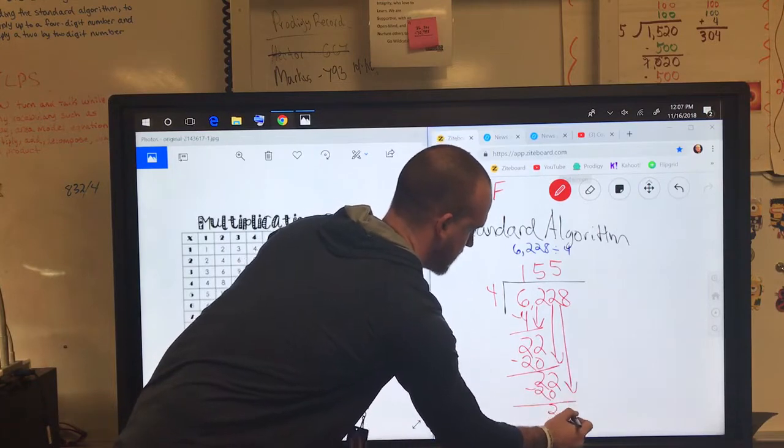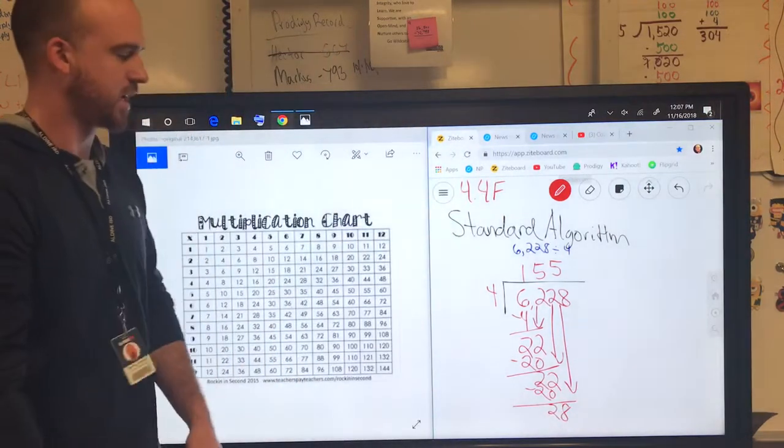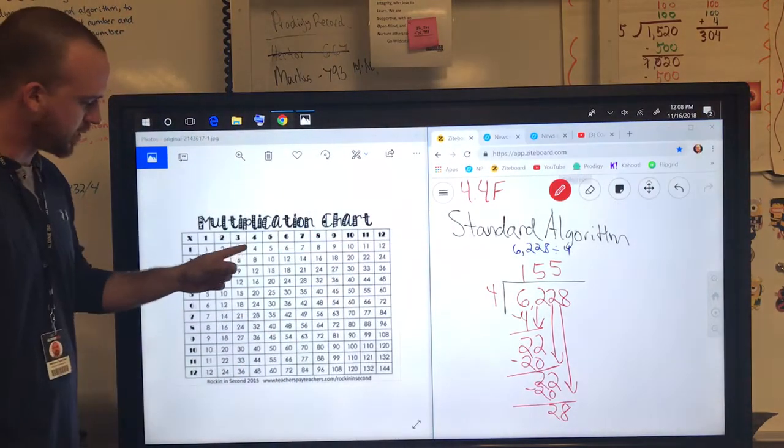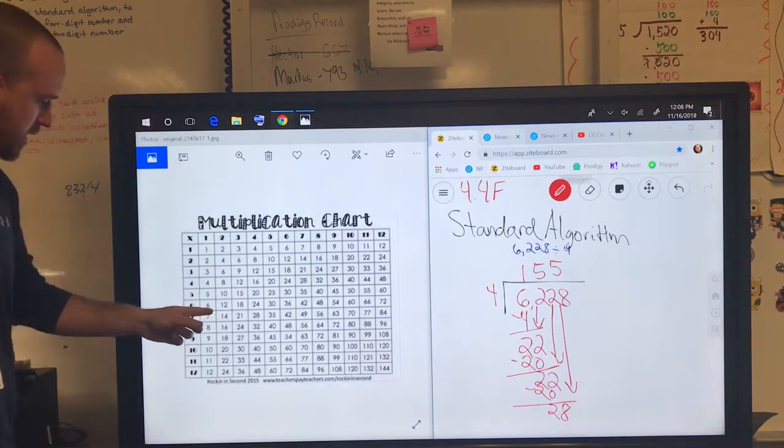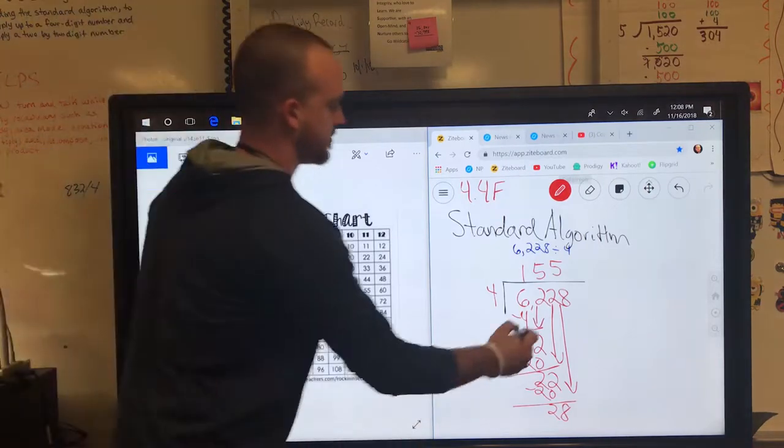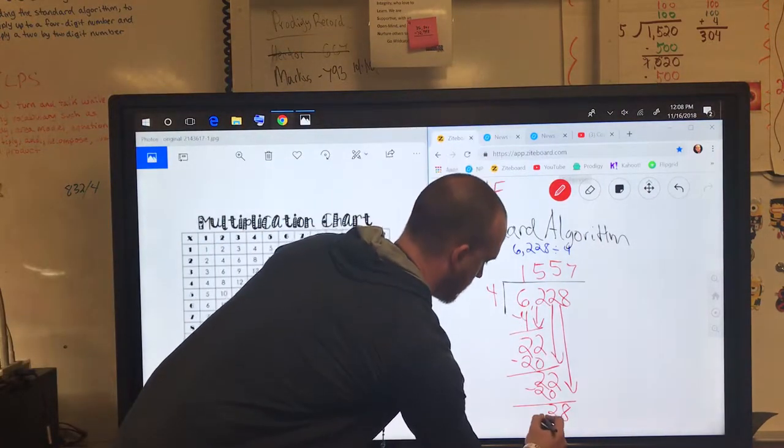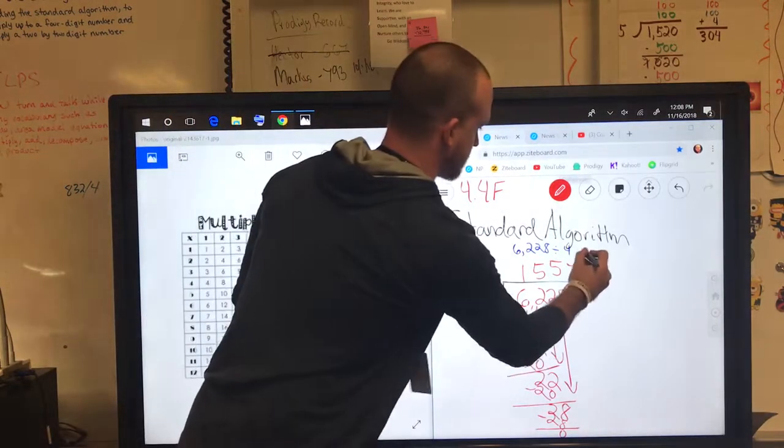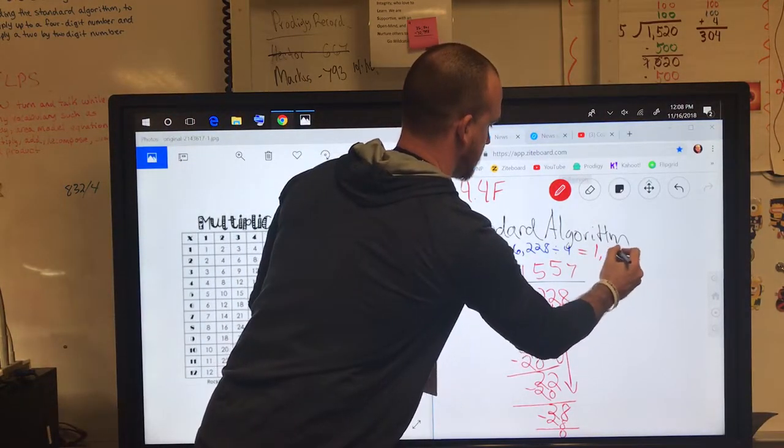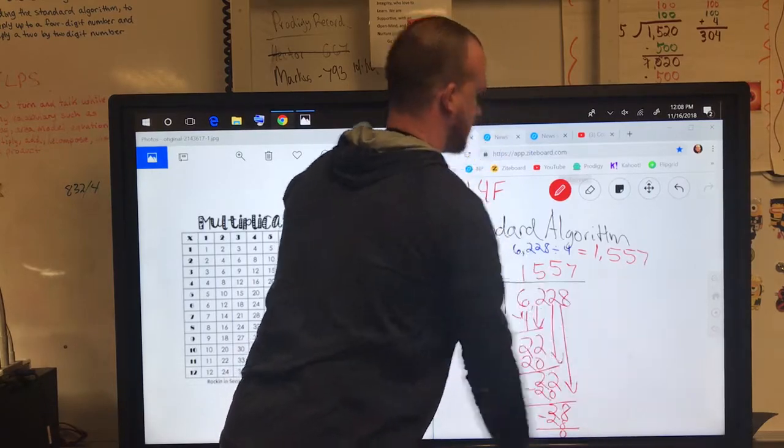I bring the 8 down. Now it's a 28. I skip count by 4. 4, 8, 12, 16, 20, 24, 28 is right there. I look to the left. That's a 7. I put the 7 on top. 4 times 7 is 28. Subtract it, you get 0. So your quotient is 1,557.